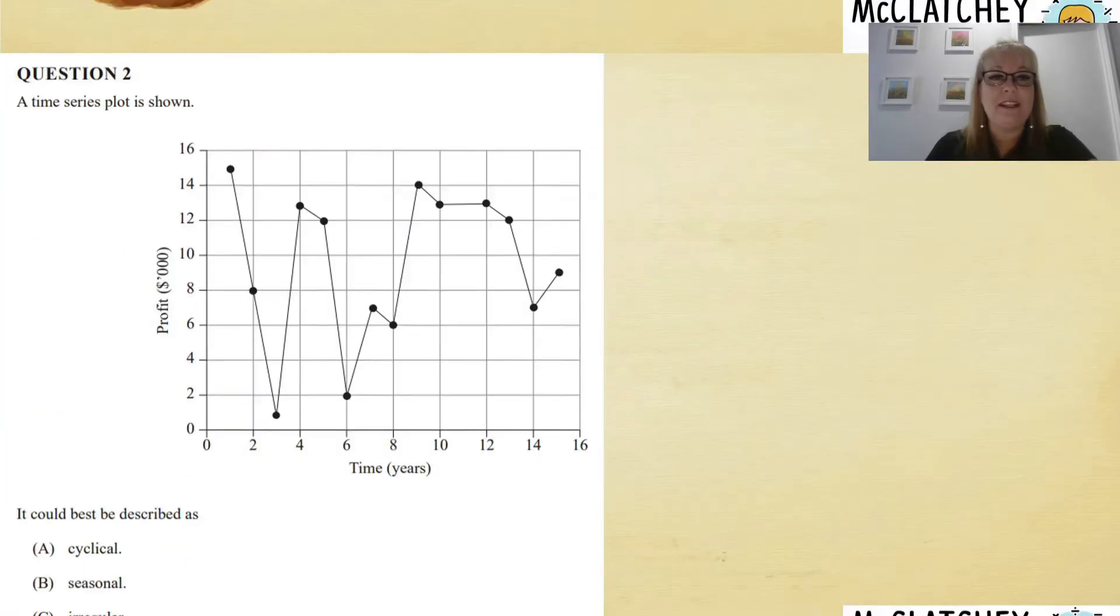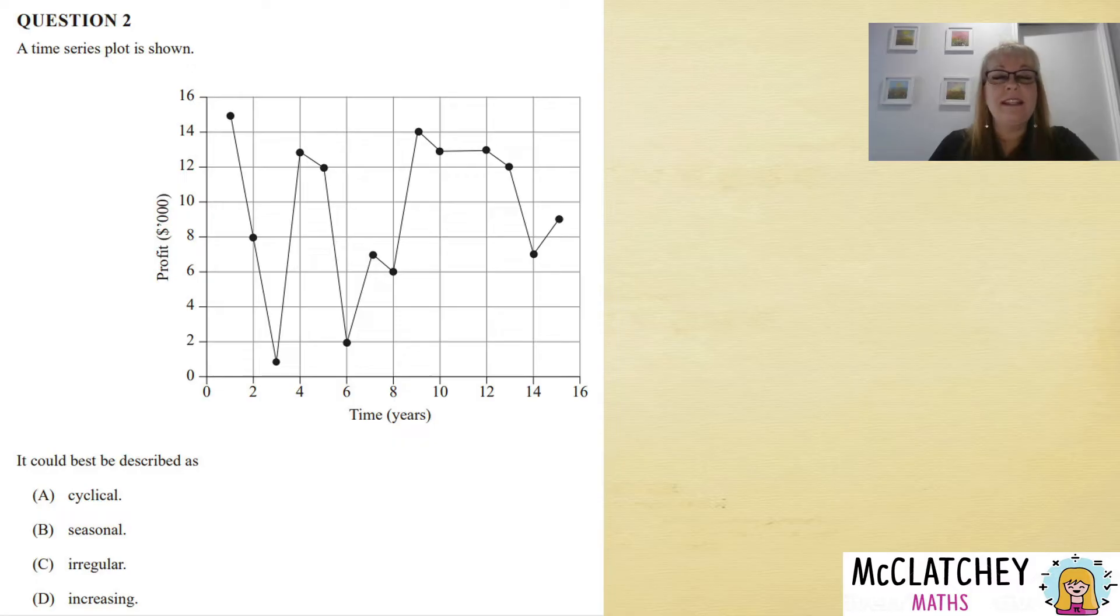This was question 2 in the exam. A time series plot is shown—we can see time on the x-axis and profit on the y-axis. We're asked to describe it.